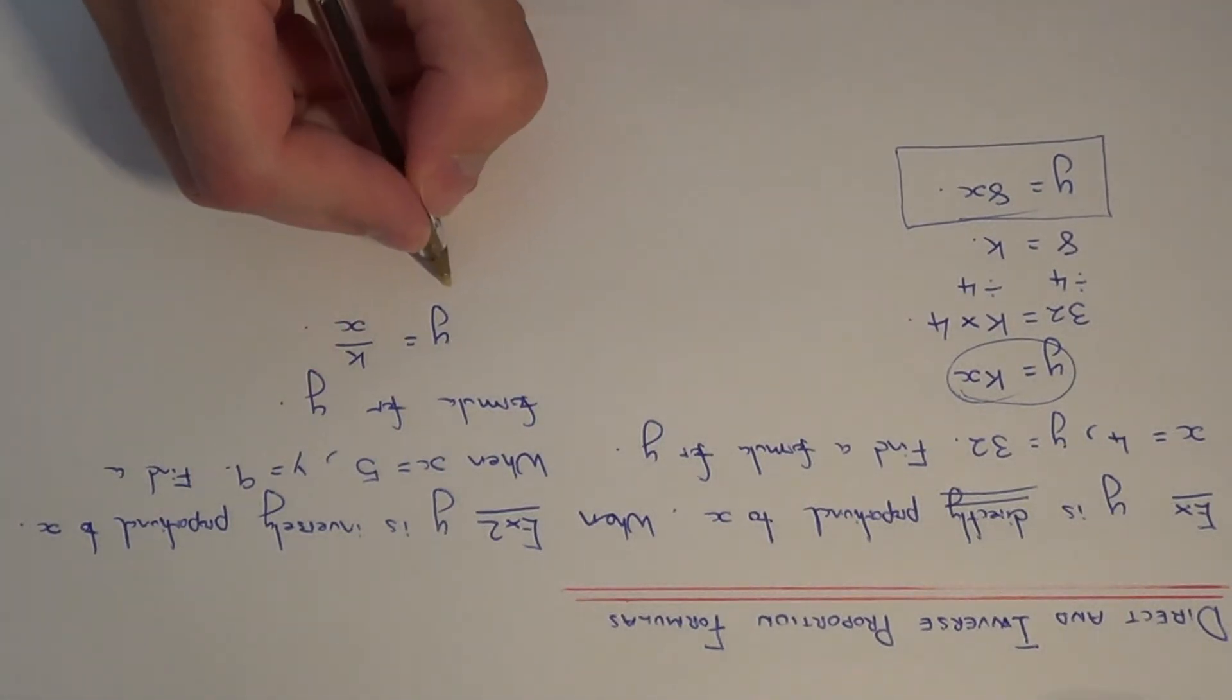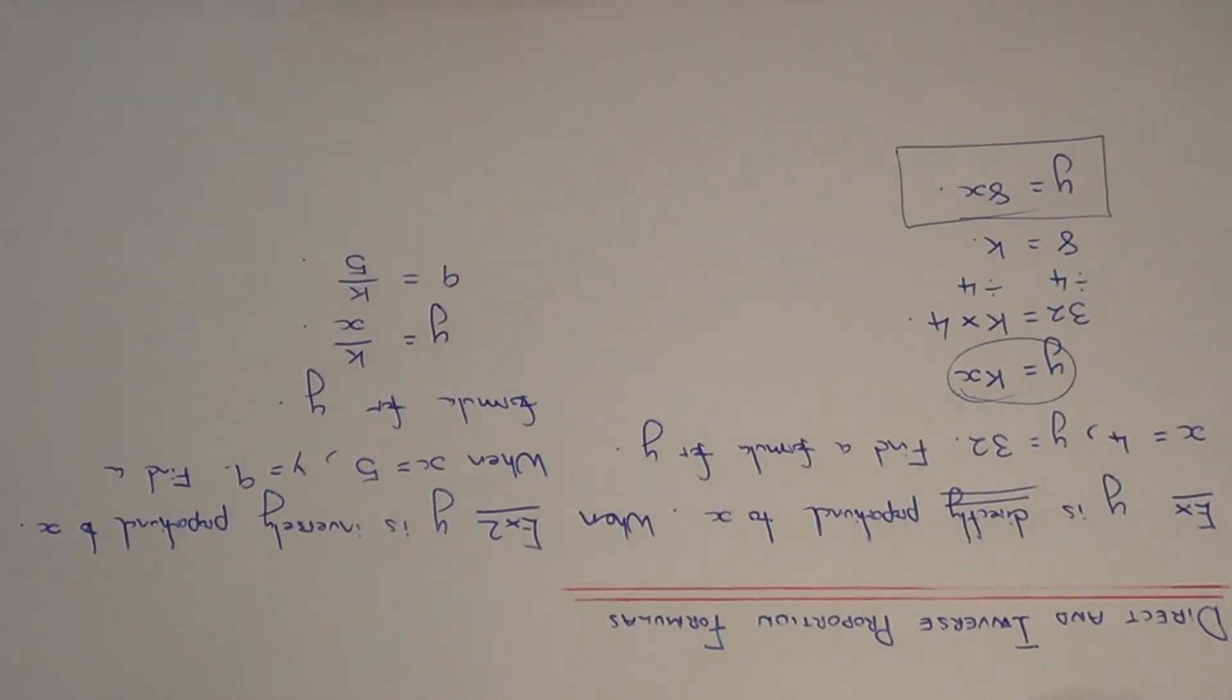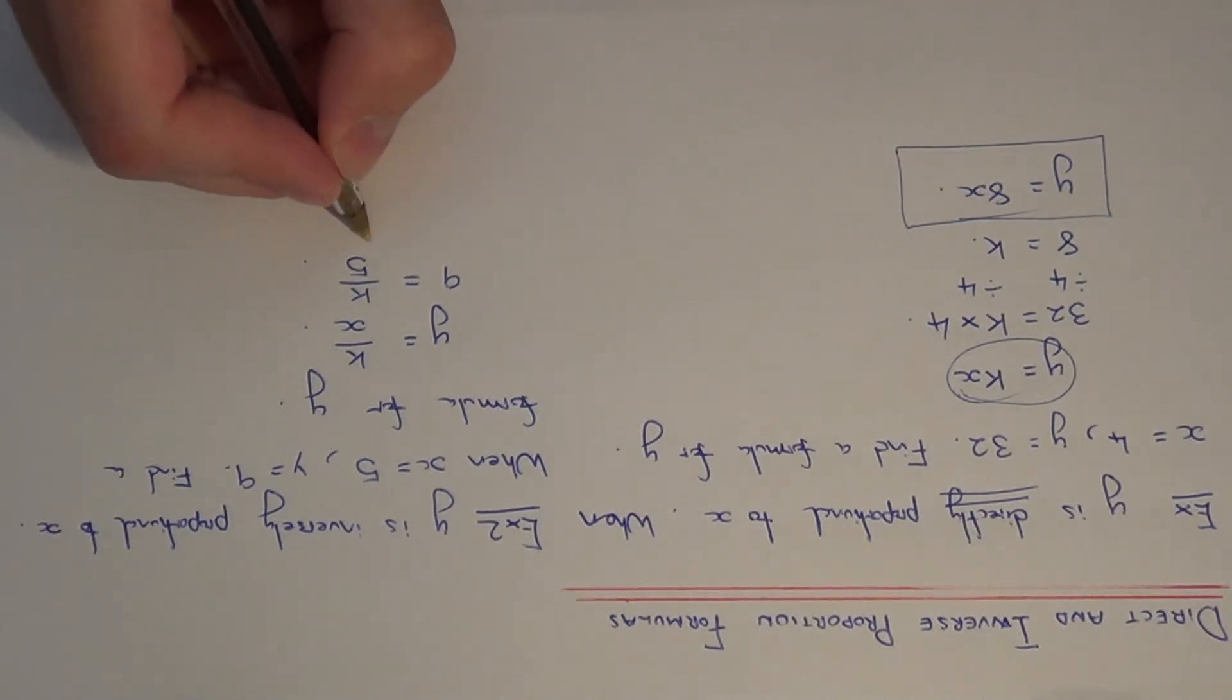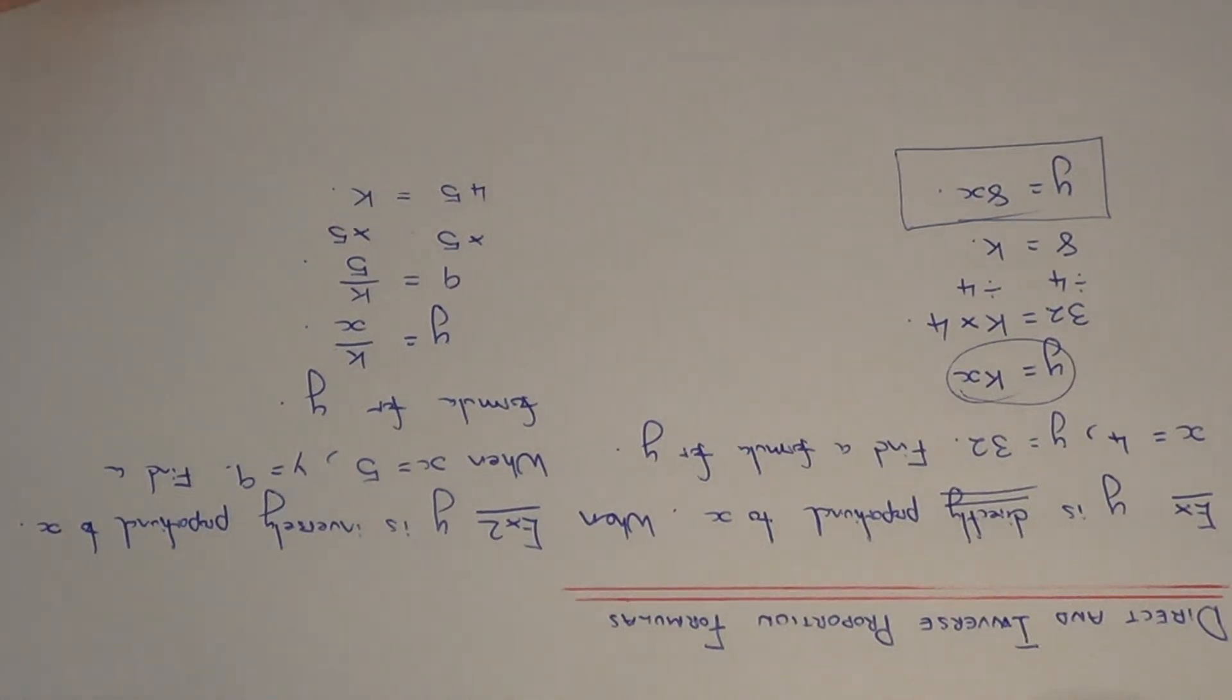When y is equal to 9, we know that x is equal to 5, so we just need to sub these in. To figure out what k is, we need to get rid of the divide by 5, and we can do this by multiplying both sides by 5. So 9 times 5 is 45, and this is our value of k.